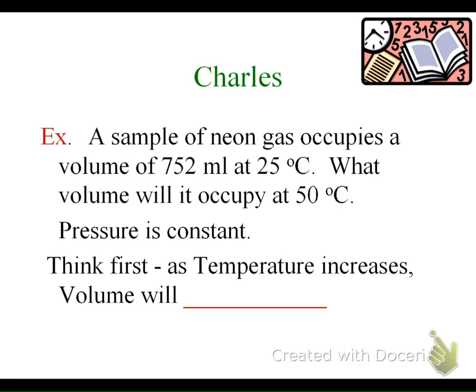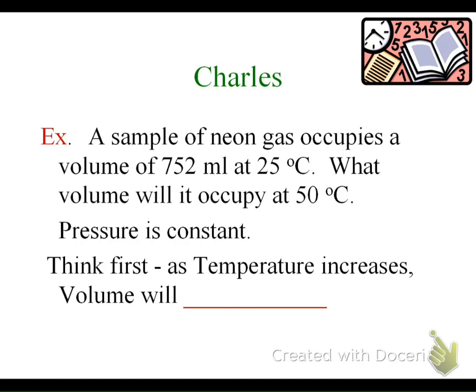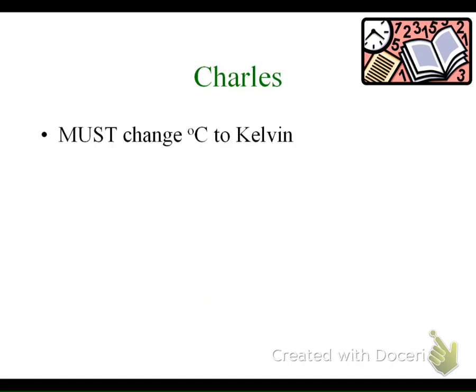Here's a math problem: a sample of neon gas occupies a volume of 752 mL at 25 degrees Celsius. What volume will it occupy at 50 degrees Celsius? Pressure is constant, and the number of moles or molecules is also constant. Because we know it's a direct relationship, we know the volume will increase. Now we're going to check that with our math. First, remember we have to change our degrees Celsius to Kelvin. I like to list out the variables to make sure T1 and T2 values go in the correct spot.